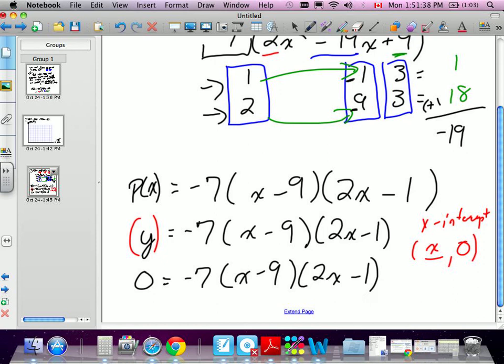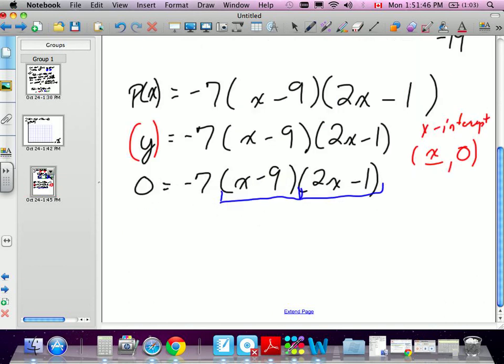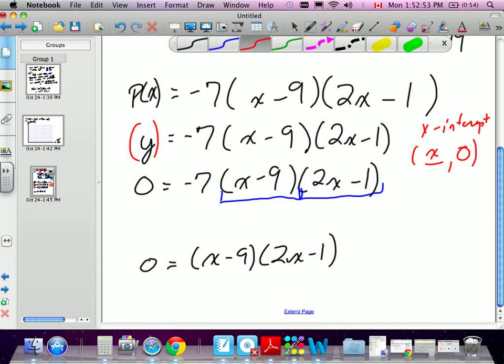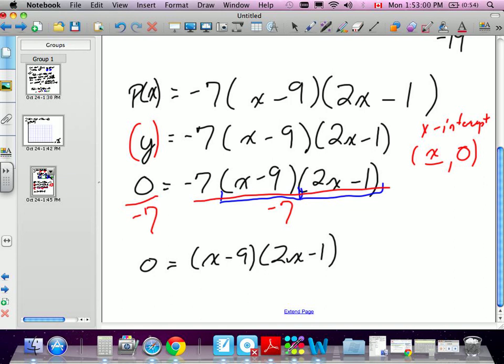So 0 is equal to negative 7, x minus 9, 2x minus 1. And now what I need to do is I need to set either of these brackets equal to 0. Now I don't know if I brought this up with you guys before, but technically this is another term here, right? We don't set it equal to 0, it just kind of sits on the side, it doesn't seem to do anything. The reason I don't do anything with that is because if I were to divide both sides by negative 7, 0 equals x minus 9, 2x minus 1. So what I ended up doing is I divided this whole side by negative 7, and this side by negative 7. When I did the right side of the equation by negative 7, what ends up happening is this negative 7 and this negative 7 cancel each other out. So I'm only left with the two brackets. 0 divided by negative 7 is just 0.